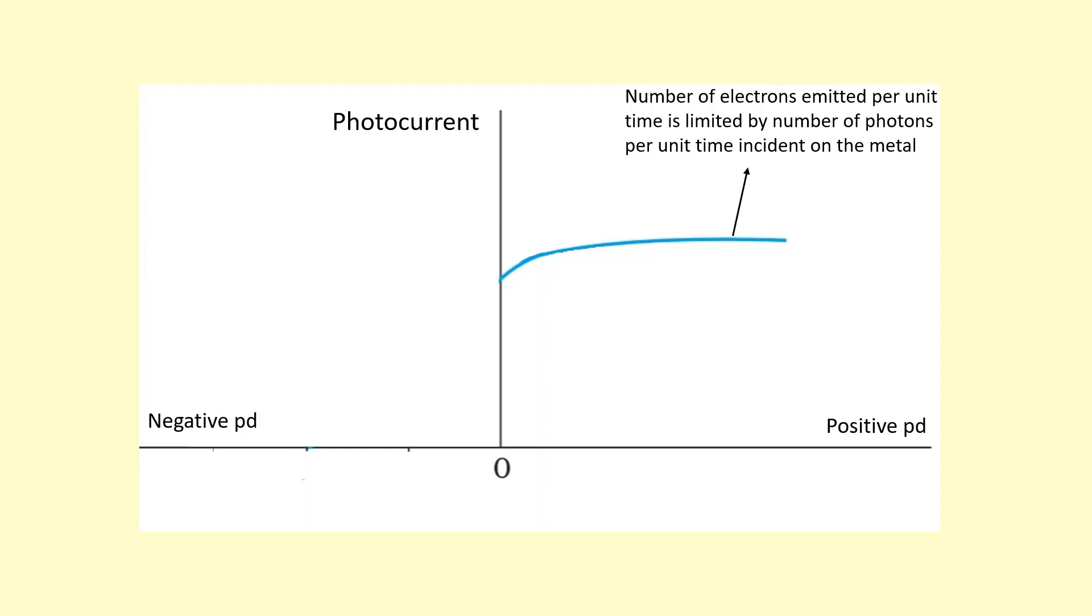But when we apply a negative potential difference, the current starts to decrease. That's because the electrons that are being emitted with a low amount of kinetic energy are being attracted back to the positive plate. So they're not reaching the negative plate. So the current starts to decrease. And then eventually, if you keep making the potential difference more and more negative, you get the stopping potential here. And we can just read off this graph and find the stopping potential.